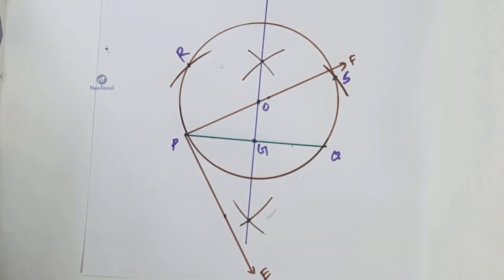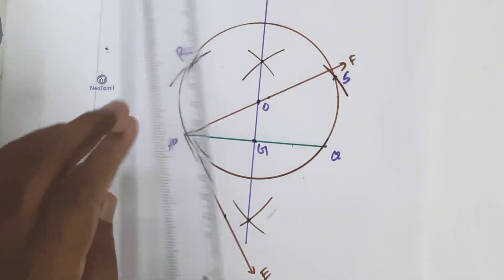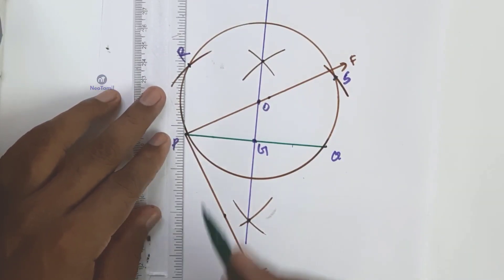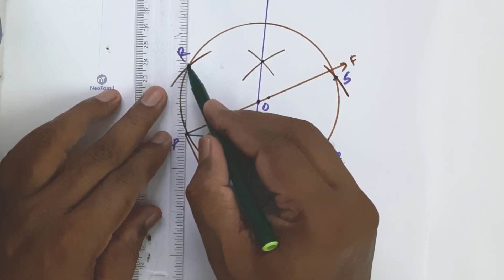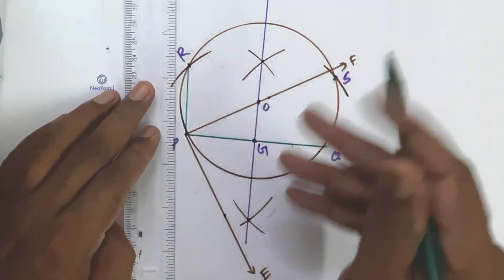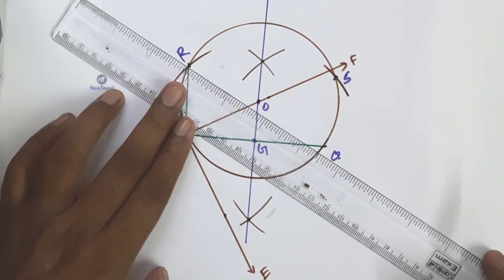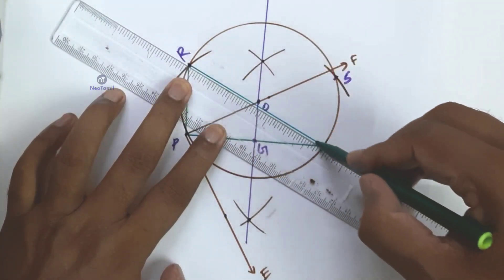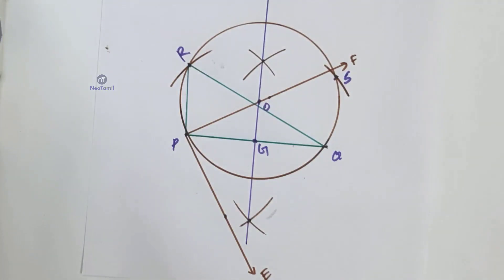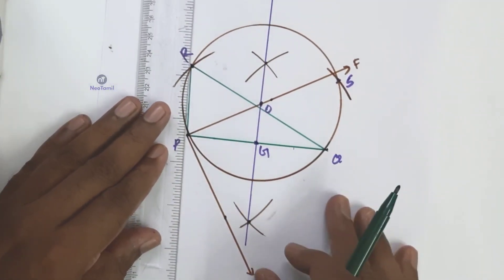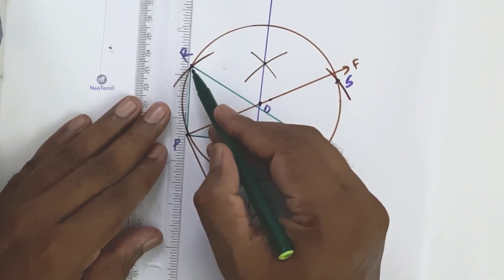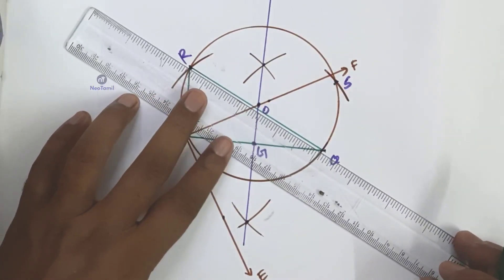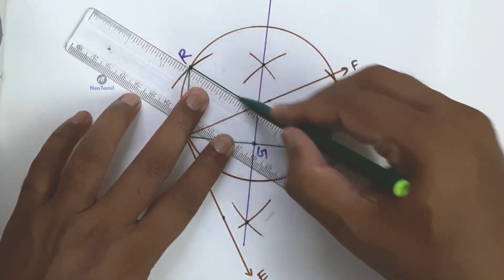The triangle construction is now complete. Join the vertices to form triangle PQR. This is the required triangle.